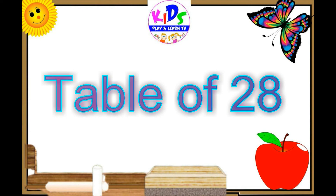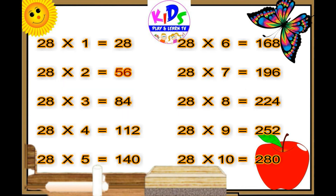Let's repeat. 28 ones are 28, 28 2s are 56, 28 3s are 84, 28 4s are 112, 28 5s are 140, 28 6s are 168, 28 7s are 196, 28 8s are 224, 28 9s are 252, 28 10s are 280.